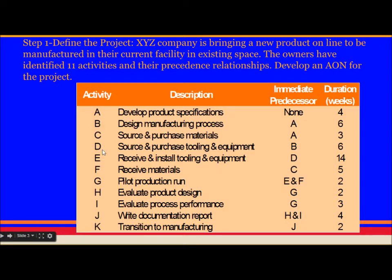This is the activity. This is the description what we are going to do in that activity. And this is the immediate predecessor. Which means that activity A can start anytime and has duration of 4 weeks. Activity B can only start when A has completed. Activity C can only start after A has completed. Similarly all these things.